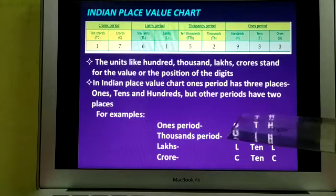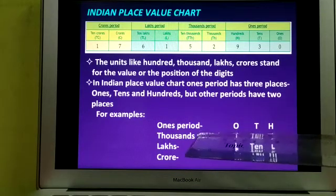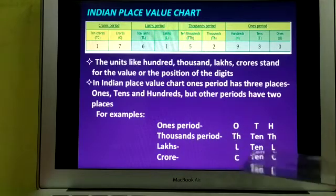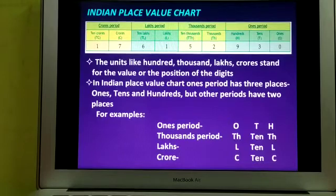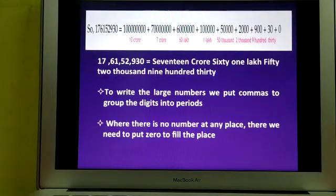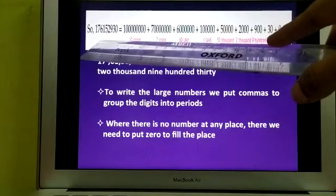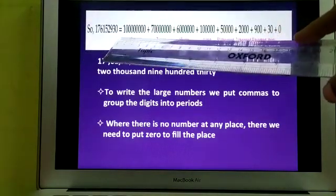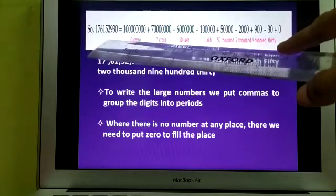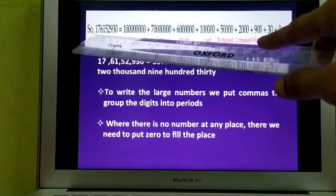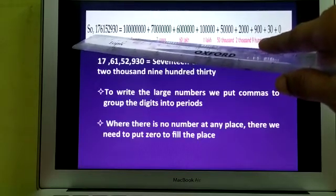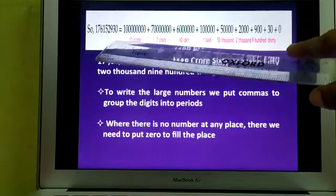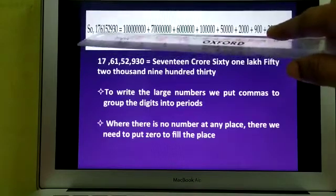These are the short forms for writing the place value: ones period (O), thousands period (Th), ten thousands (10Th), lakhs (L), ten lakhs (10L), crores (C), ten crores (10C). Now we will understand how to write large numbers according to the system. Here you see the number 176152930. To expand this number, first you start from the leftmost digit, which is 1. Now 1 is in which position? It is in the ten crores place. Ten crores has nine digits.